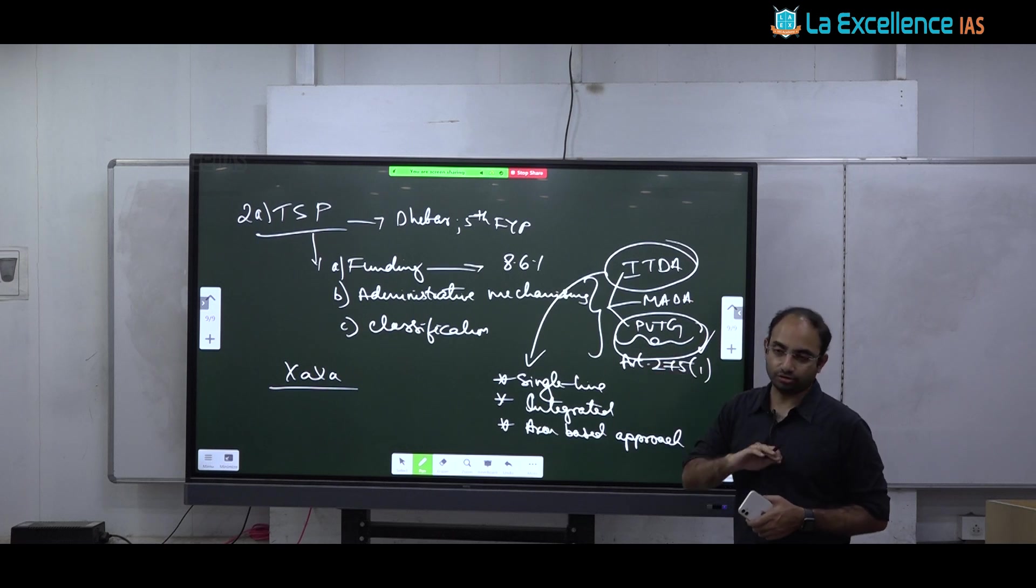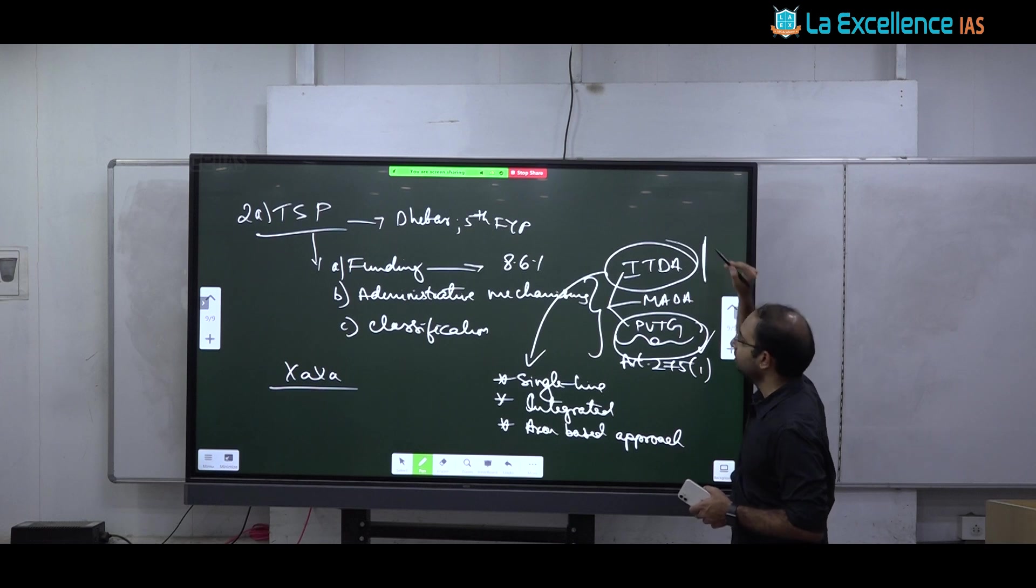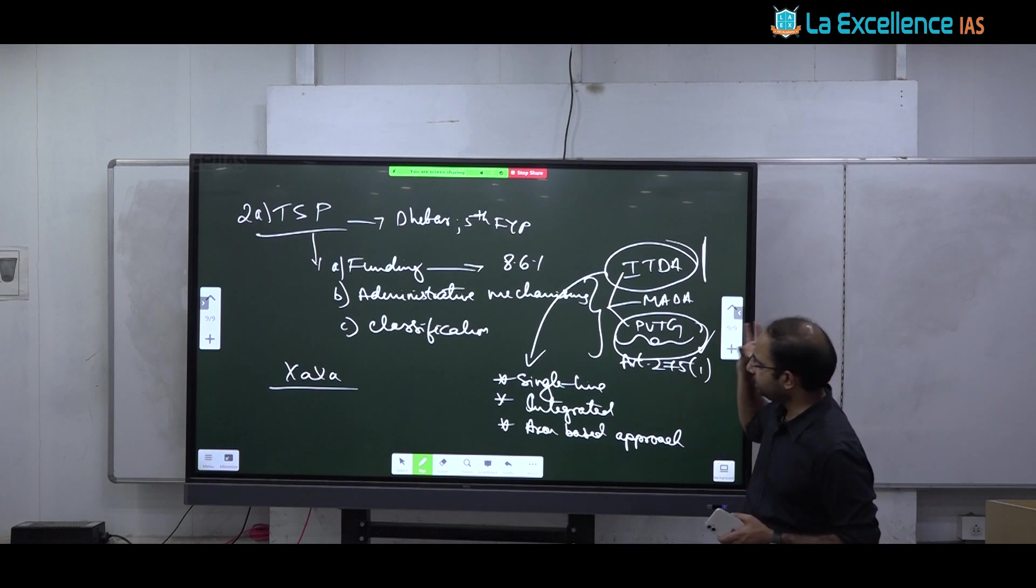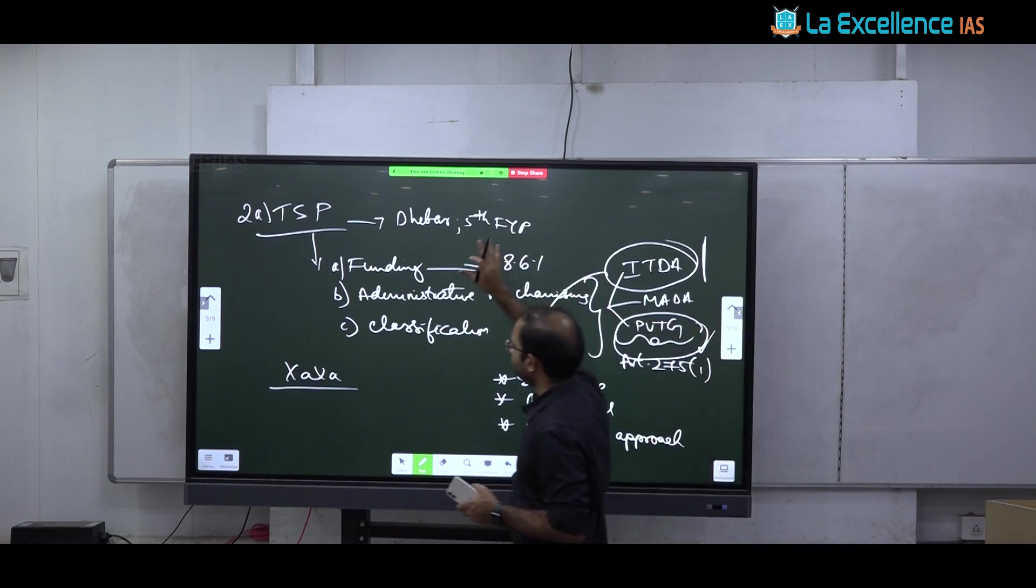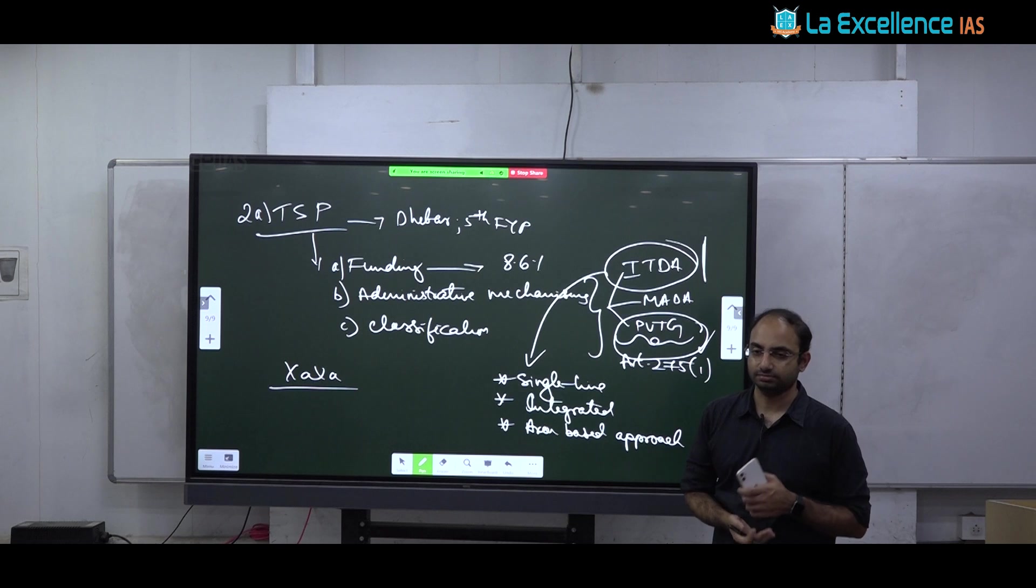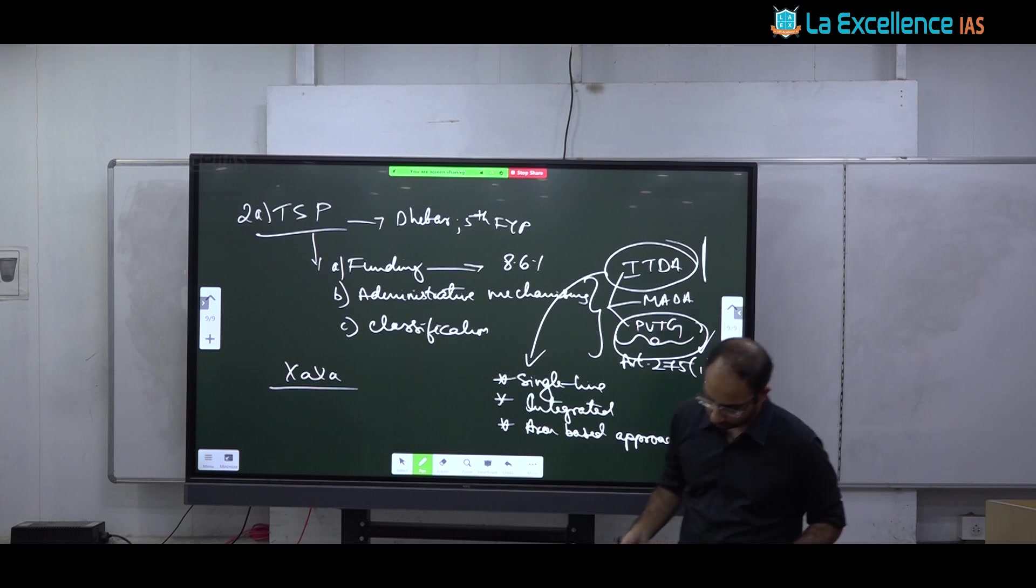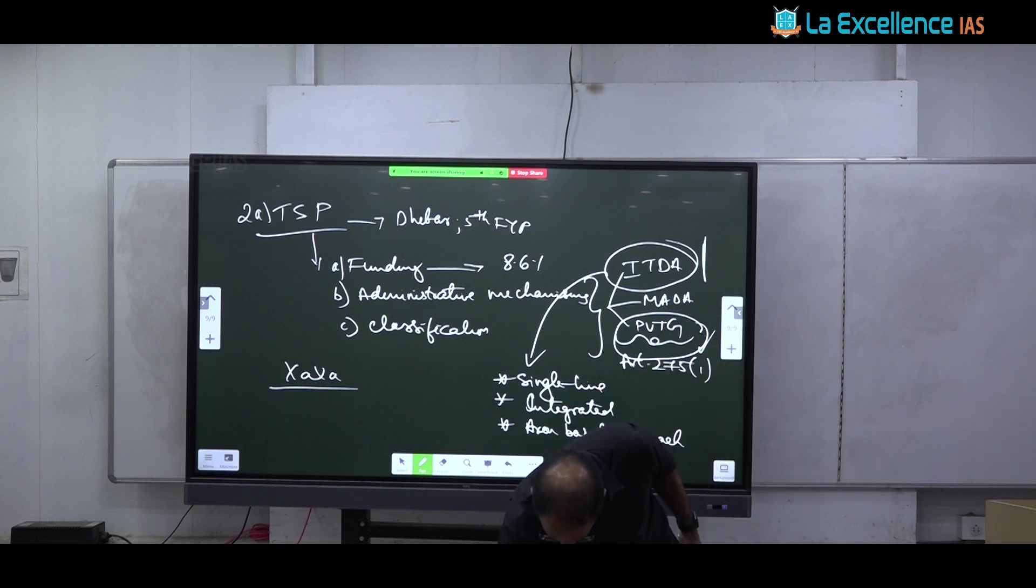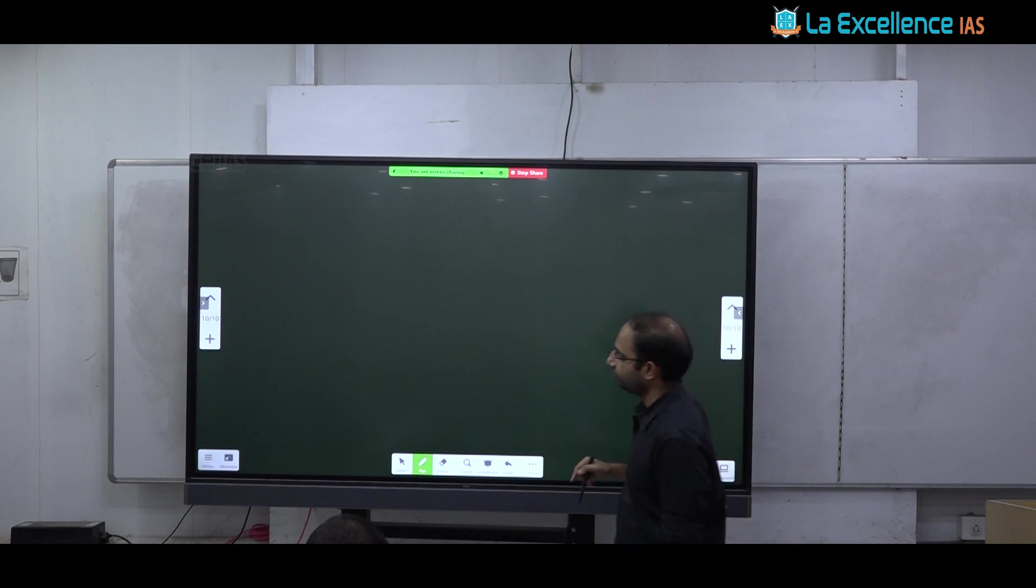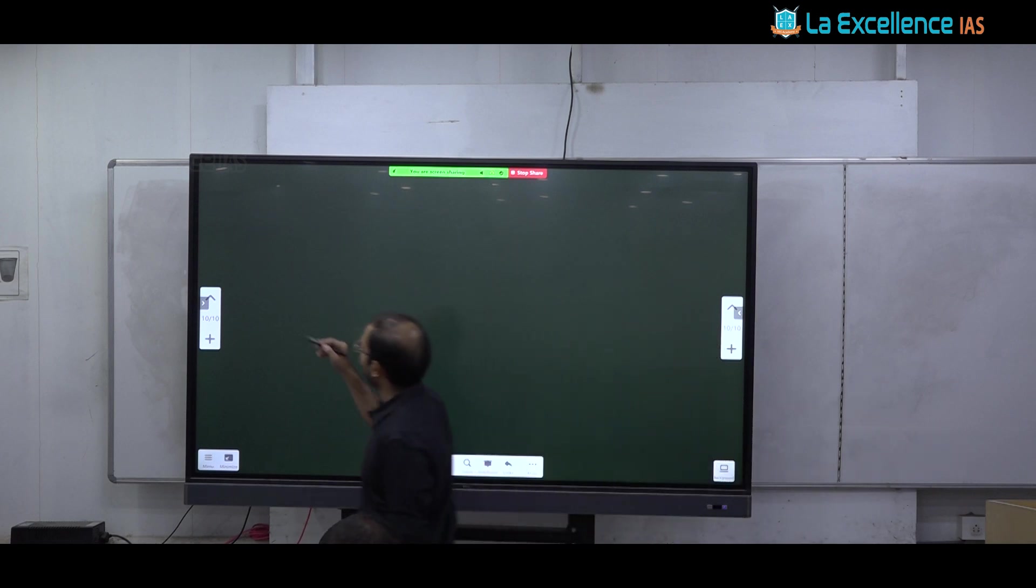So in practice tribal sub plan in many areas they are using tribal sub plan funds to do non-tribal works in tribal areas. If they build a big road they are saying this is tribal sub plan. But the road is used by everybody. So tribal specific programs or schemes are not being done using tribal sub plan funds. So what is the way forward? Again Kaka committee. This committee suggest that ITDA model must be scaled up and must be emulated in multiple states in central India not just in Telangana AP.